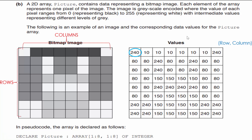Let's look at some examples. The value 240 appears at row 1, column 1 — note they start at row 1, not row 0. A second instance of 240 is on row 2, column 3. The value 150 is at row 4, column 6.